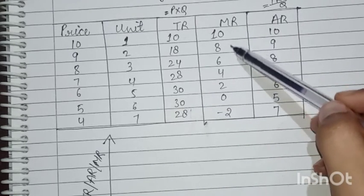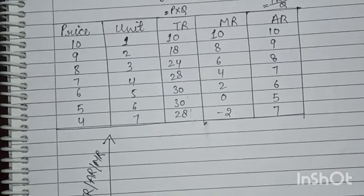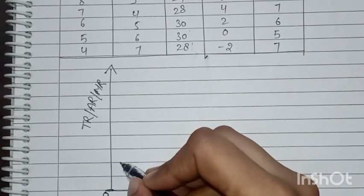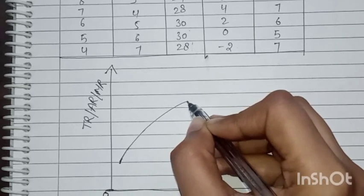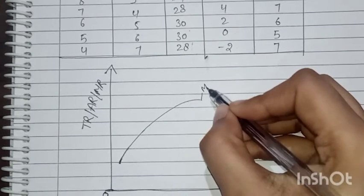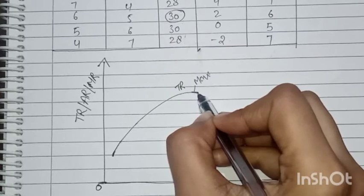MR is falling, then reaches 0, then becomes negative. AR is decreasing but remains positive. TR increases at a diminishing rate, becomes constant, then decreases. For the TR curve, since TR starts at 10, we start the graph from 10. TR increases at a decreasing rate — so it curves slightly — reaches a maximum point of 30, stays briefly constant, then falls.